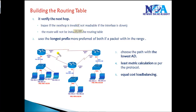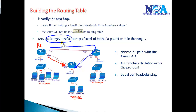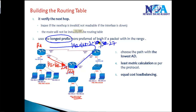Assuming the next hop is reachable, if from router one there are two possible routes to reach the 192.168.2.0 network, the first thing it checks is the longest prefix match. For example, one route is 192.168.2.0 /24 and the alternate route is 192.168.2.0 /27. In that case, it's going to prefer the longest match, so the /27 route will be preferred and installed in the routing table.